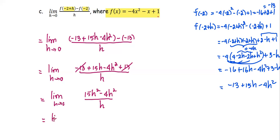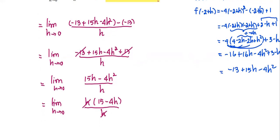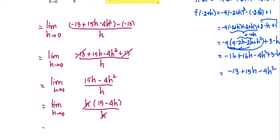We can simplify the numerator further by factoring. We factor h out and get 15 minus 4h inside the parentheses, divided by h in the denominator. The h in the numerator and the h in the denominator cancel. Now we get the problem simplified to be the limit as h approaches 0 of the expression 15 minus 4h.